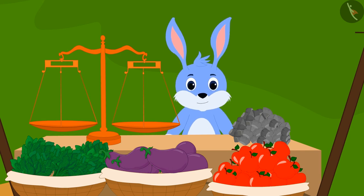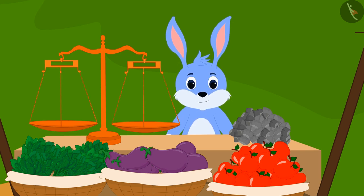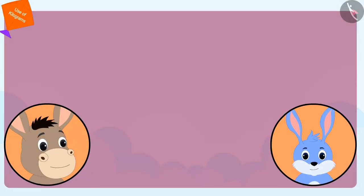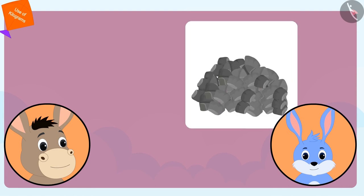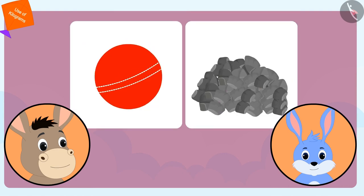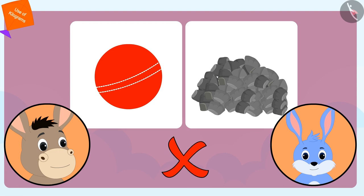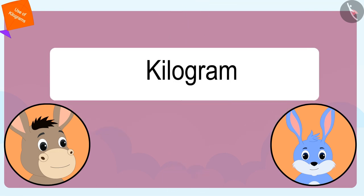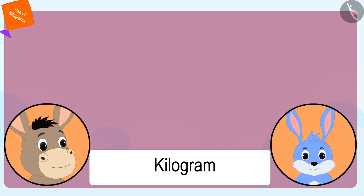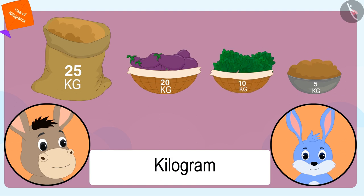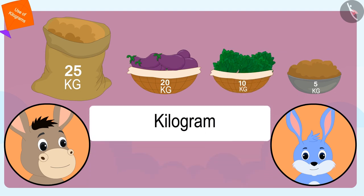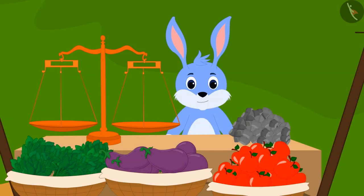Then Bunny asked Bhoala that if he had to weigh anything, how could he do it? Bhoala explained to Bunny that because objects like stones, balls, etc. are not always of the same weight, we cannot use them to measure weight. Therefore, to measure the weight of any object, we use a unit called kilogram. A kilogram is a unit of measuring weight of any object that always remains the same.